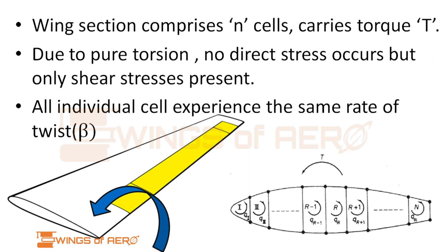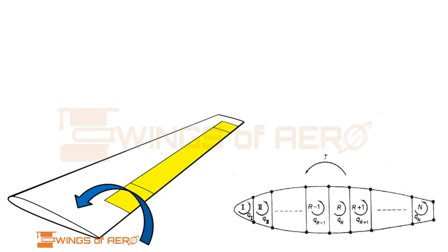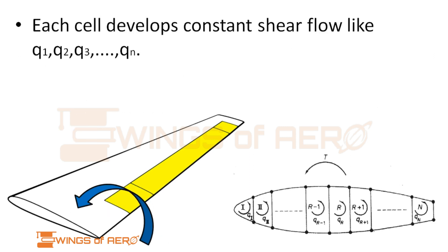Each cell develops a constant shear flow like q if there is n number of cells. The shear flow is q1, q2, q3 till qn.